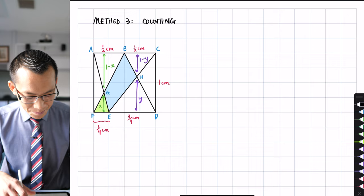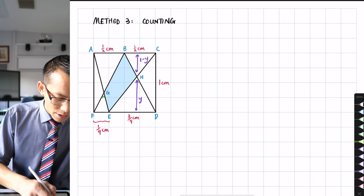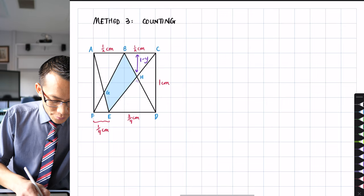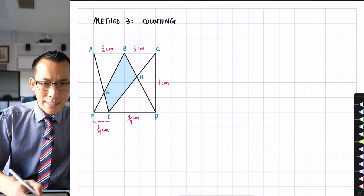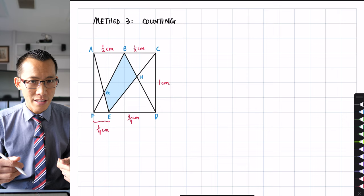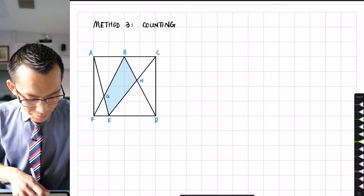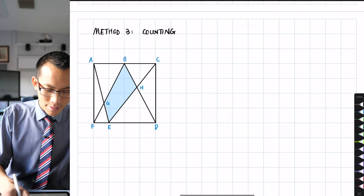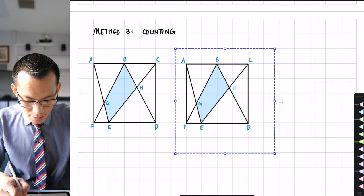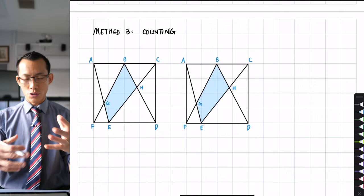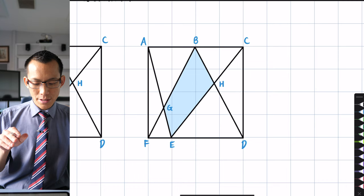It's called counting because that is actually what we're going to be doing, though it's fancy counting. The first thing I'm going to do is get rid of all this information. One of the attractive things about this solution is it doesn't even really require the measurements for any major calculations. By now we know this problem well enough: AB is a half, BC is also a half, this is three quarters, this is one quarter, and this is one. So I'm going to start with this diagram — I'll duplicate it — because I'm going to need to do this a couple of different times.